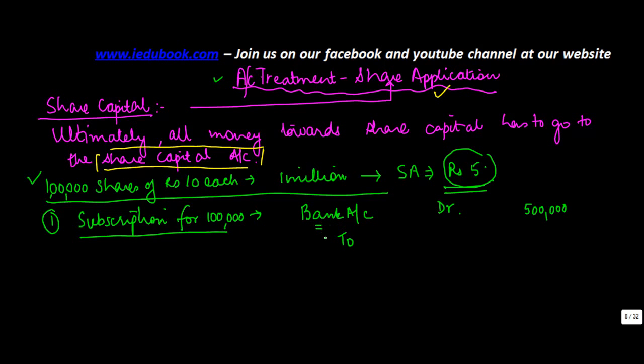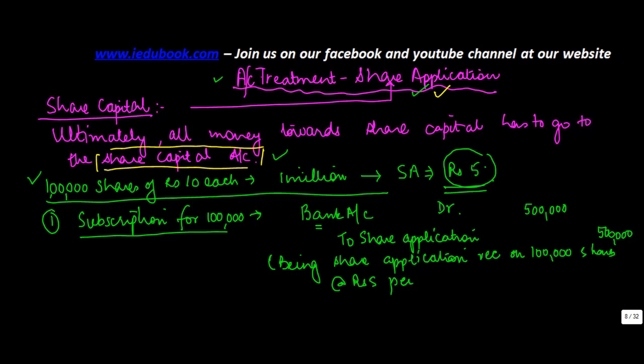Now on what account have you received this money? There are two ways to do it. You can either put it in share capital account, but as I said, for the sake of convenience and to track things, we put it in share application account. Being share application received on 100,000 shares at the rate of rupees 5 per share.